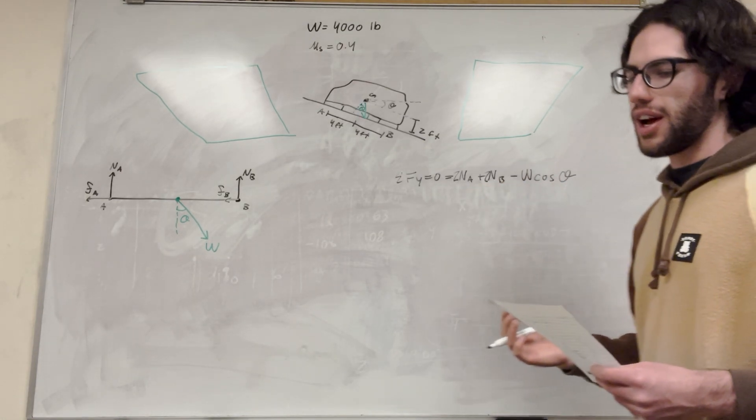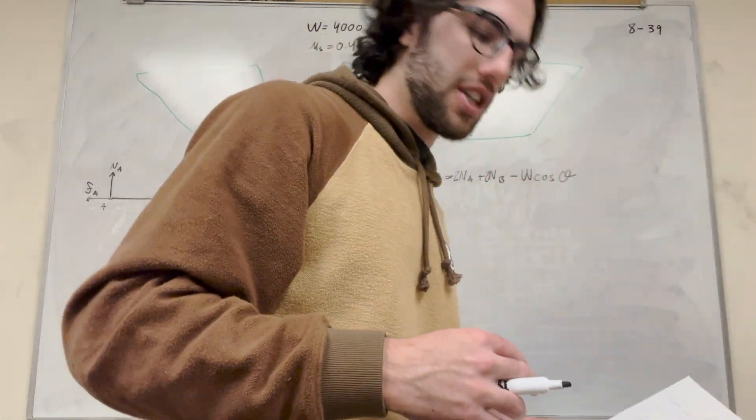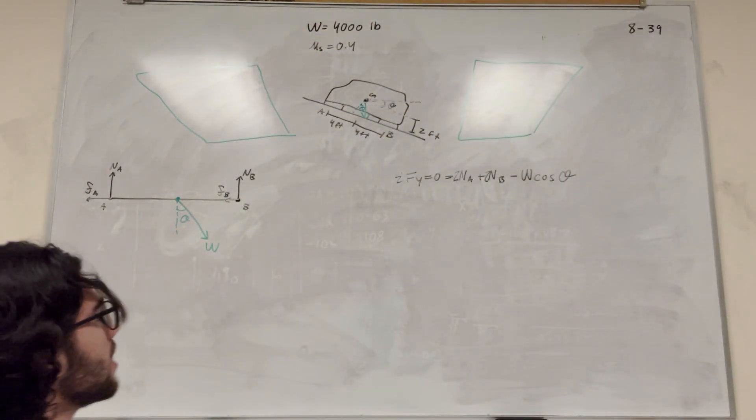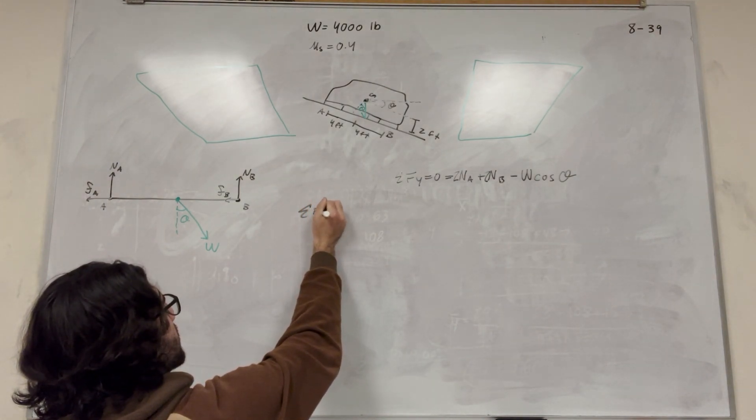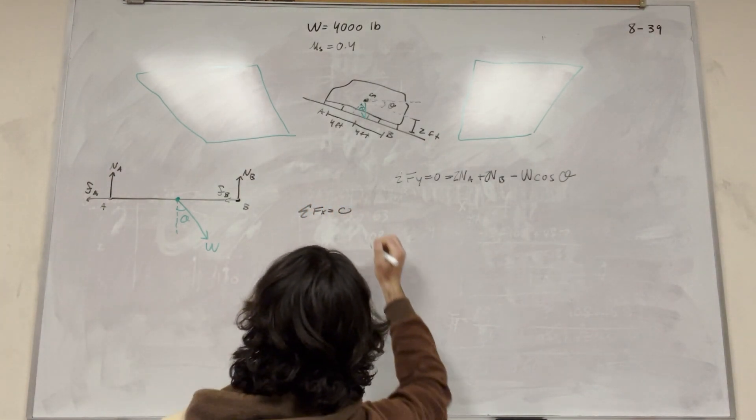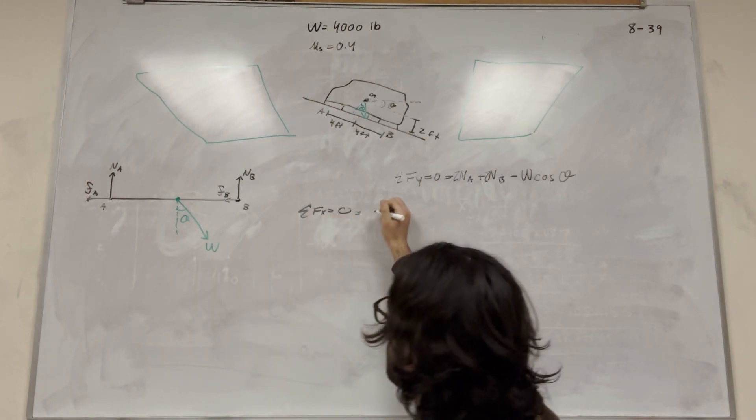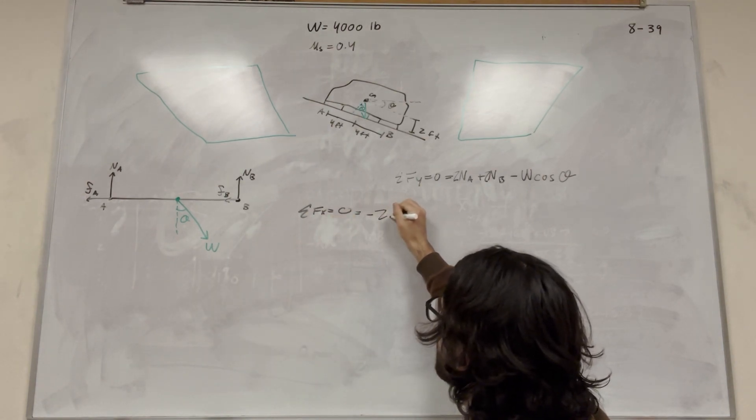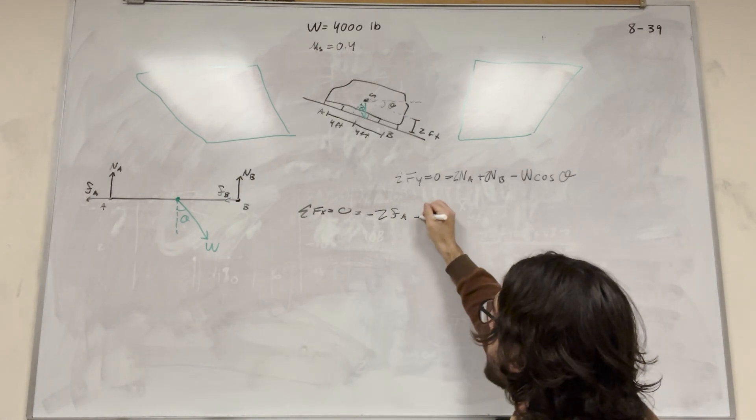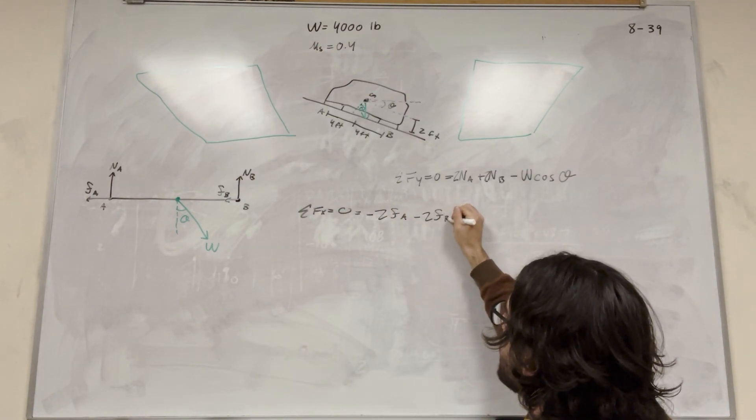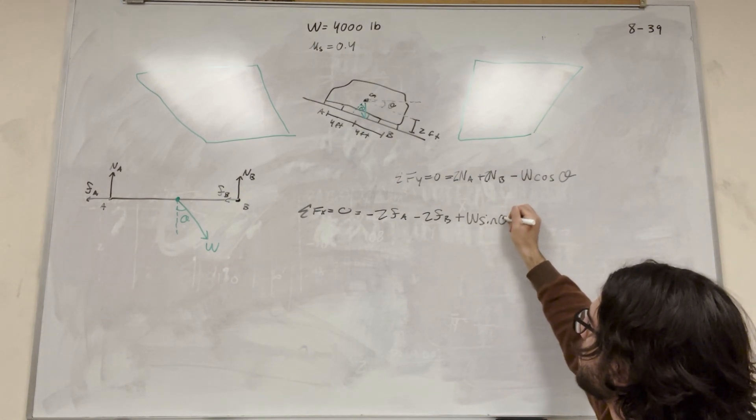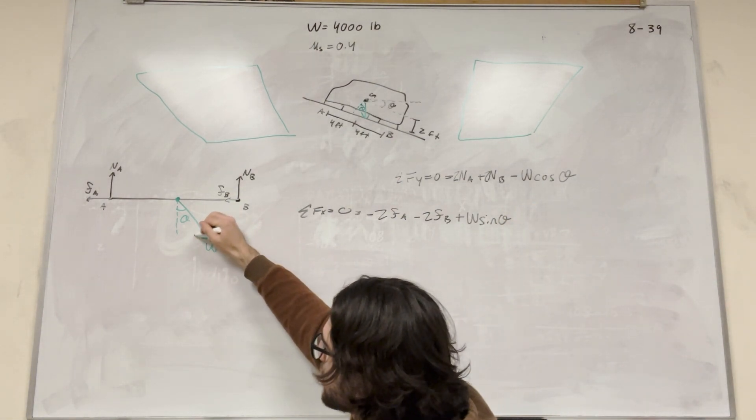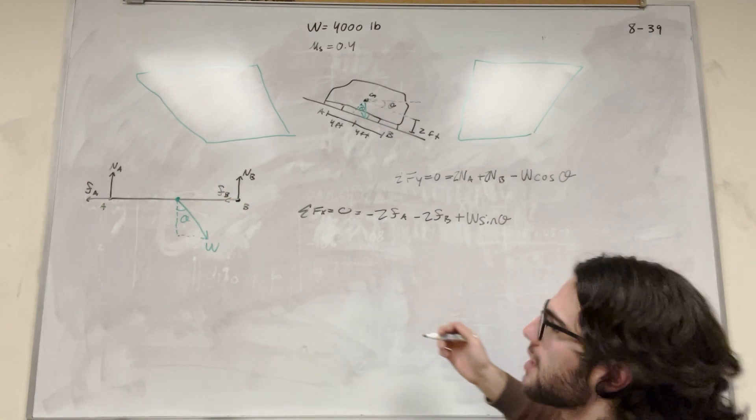So two normal of A plus two normal of B is equal to the weight of the car. So two unknowns, how have we figured it out? Well, we don't yet. So we need another equation. So another equation might be sum of the forces in the X direction. So let's add them up. So we have the friction at A. So it's going to be two minus two friction at A, because you have two tires there, minus two friction at B, plus the weight of the car, sine of theta this time, because we're looking for the X direction. So it's going to be opposite sine of theta.